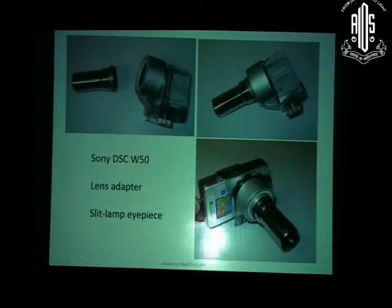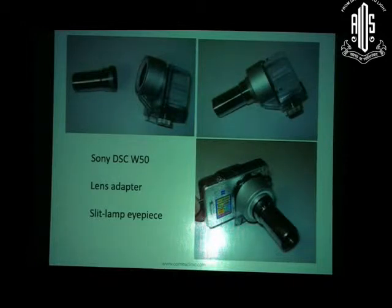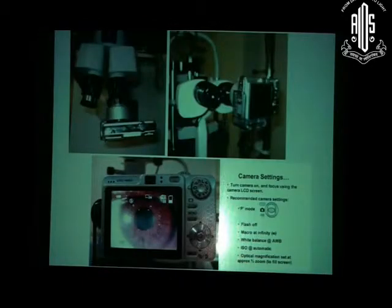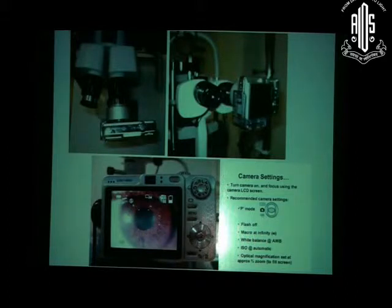Since then, we moved on to using the Sony simple point-and-shoot camera, the DSC-W50, which has a plastic adapter allowing you to attach more lenses. We created threads on the eyepiece so it could be fitted on, and it became a useful tool — just slip it onto the eyepiece, focus on the eye, and click. You can get very good photographs. We kept it in auto mode, switched off the flash, and didn't zoom more than about 10%.